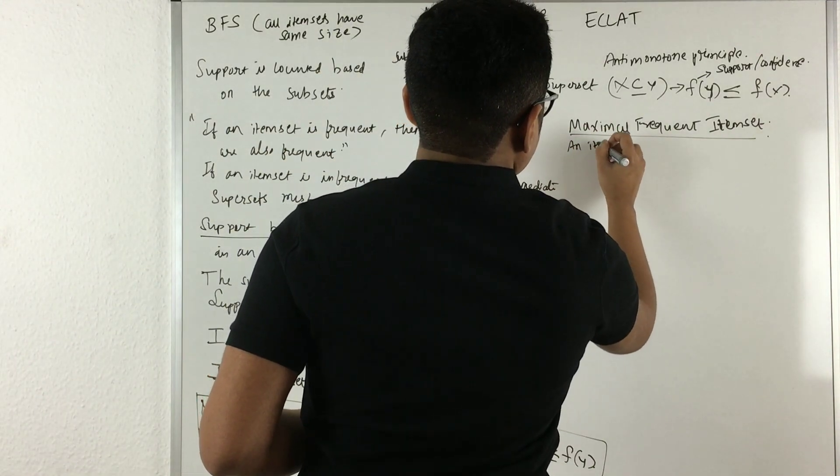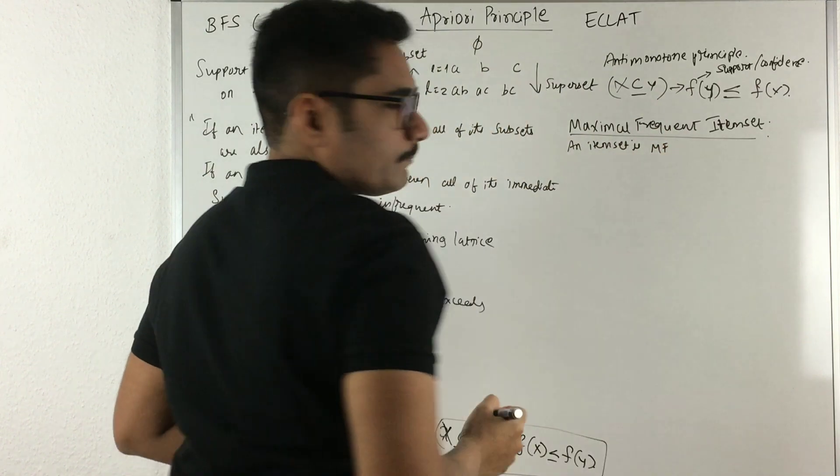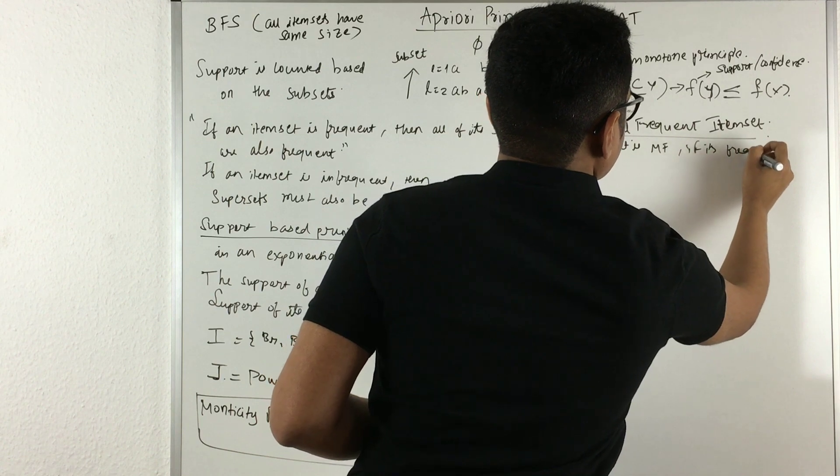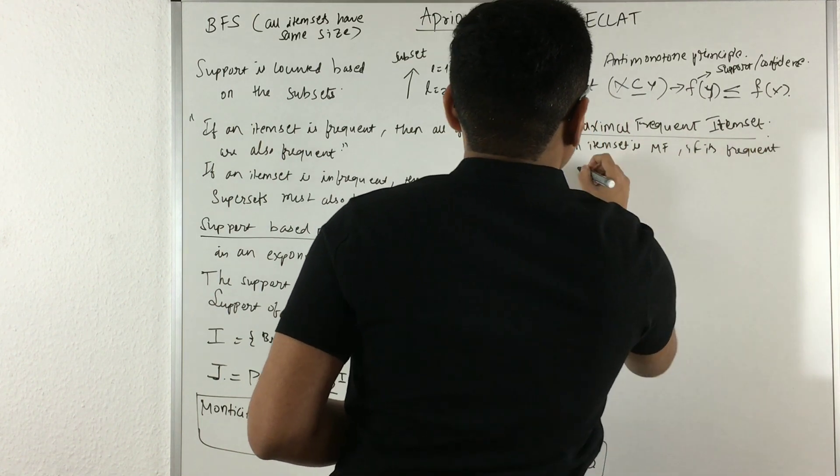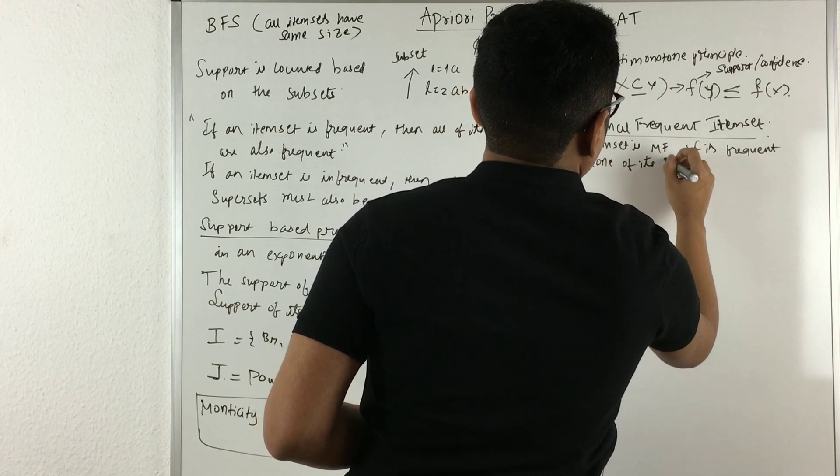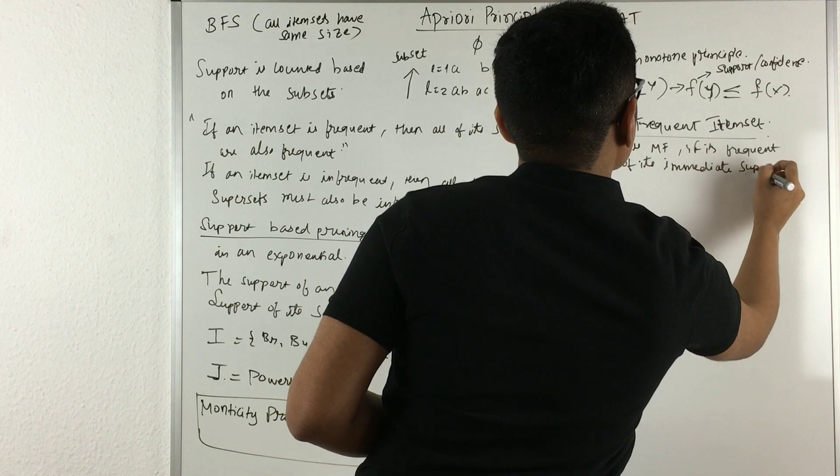An item set is maximal frequent if it is frequent and none of its immediate supersets are frequent.